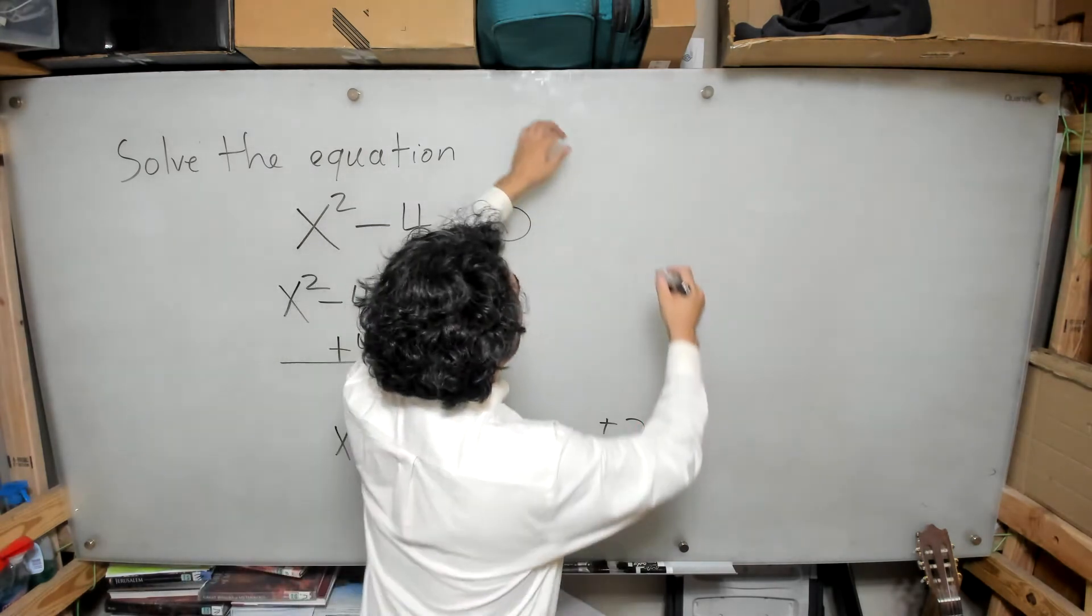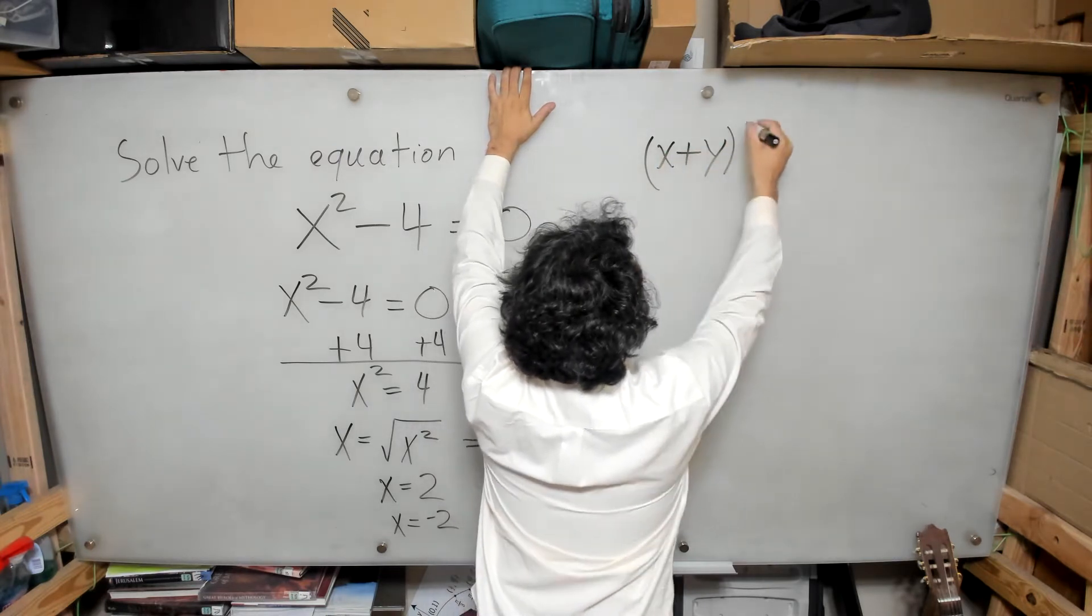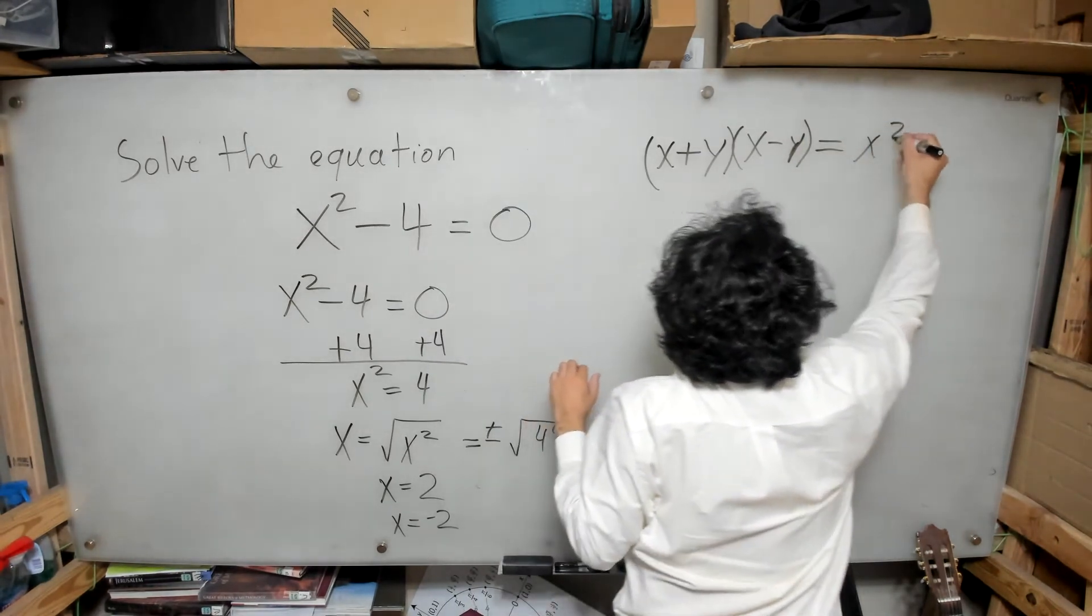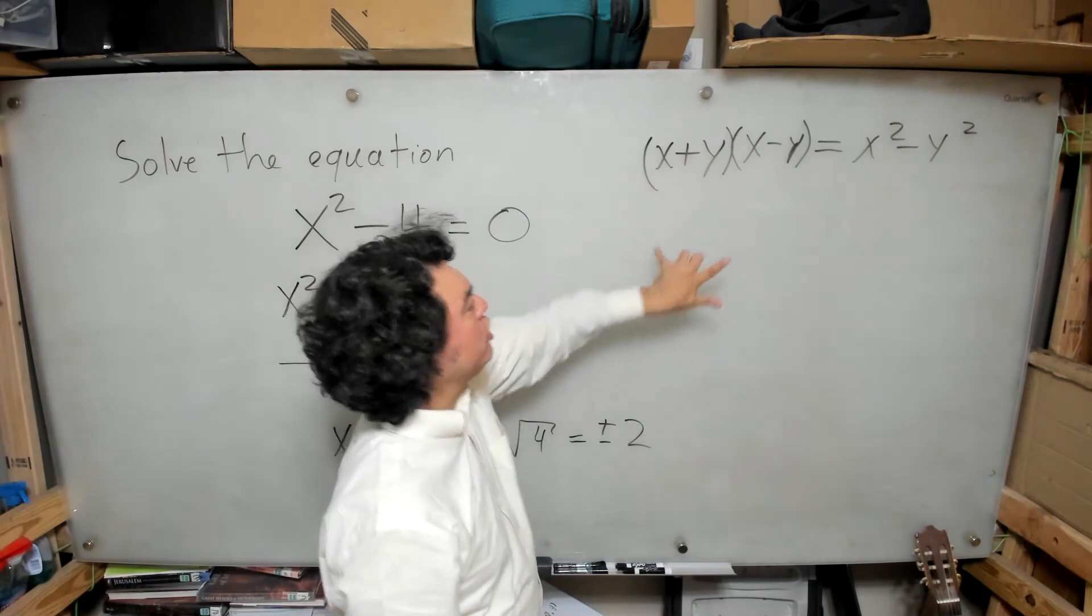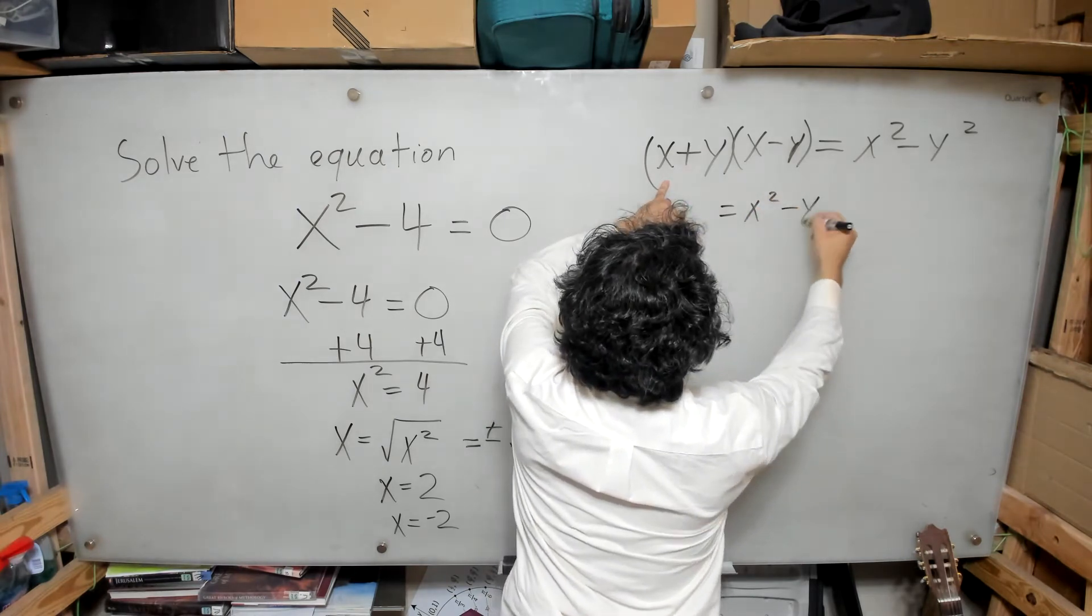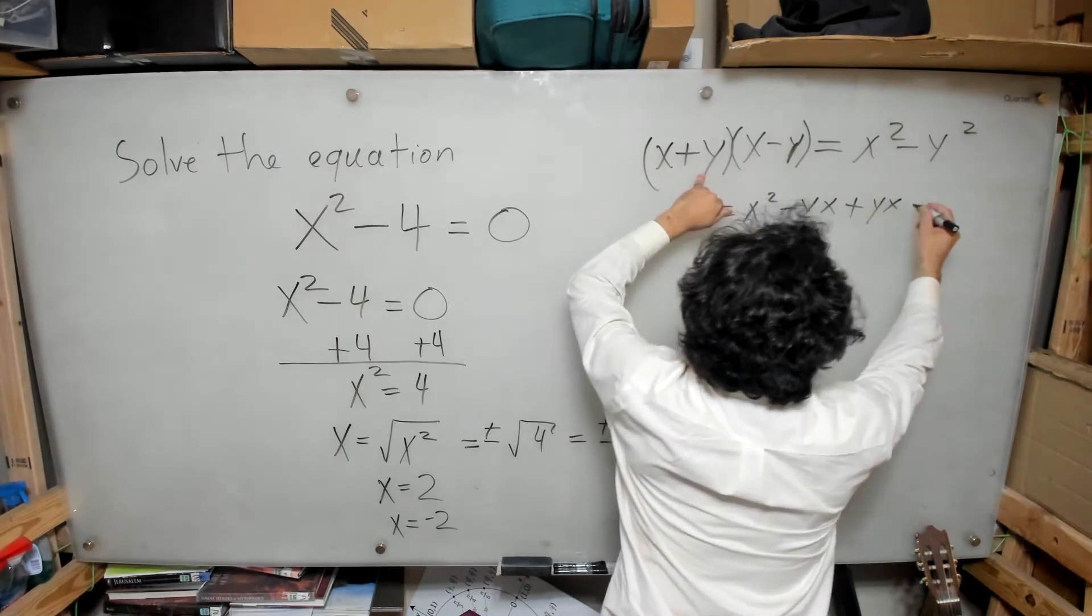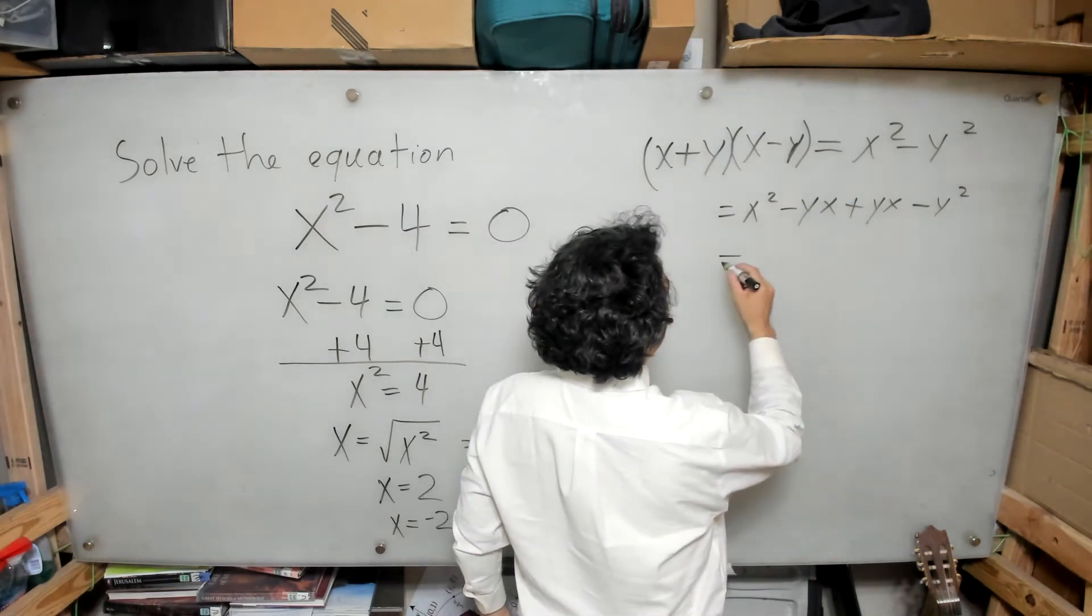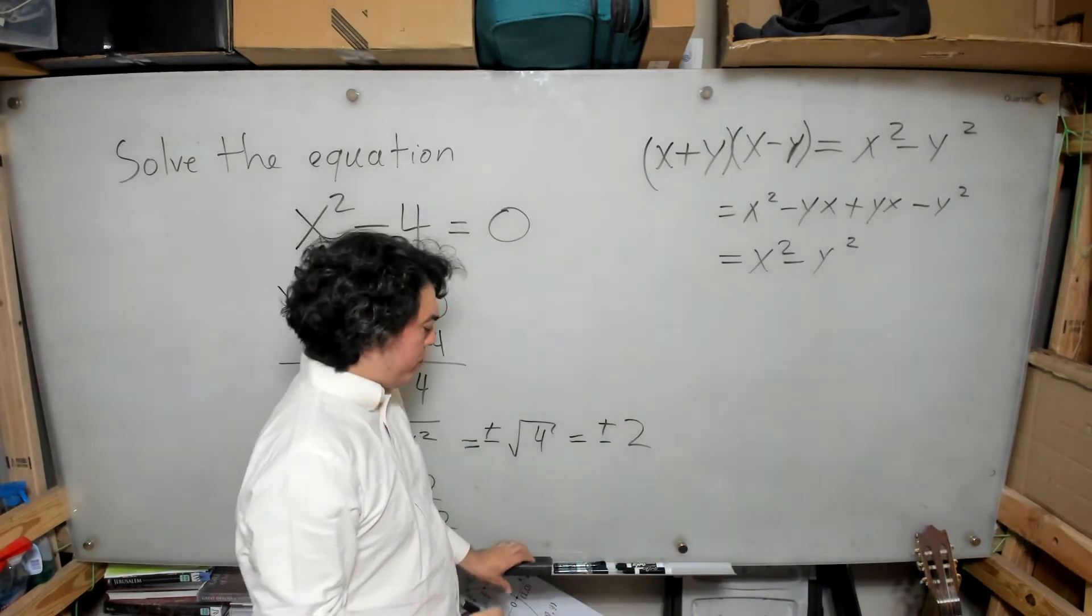So if I have x plus y times x minus y, this is always equal to x squared minus y squared. I'm just going to recap it here for you, real quick, how that's justified. So it's x times x, which is x squared, minus yx plus yx and then minus y squared. And you can see that this middle term and that middle term go away, leaving us with x squared minus y squared. This is a special factorization formula called the difference of squares.